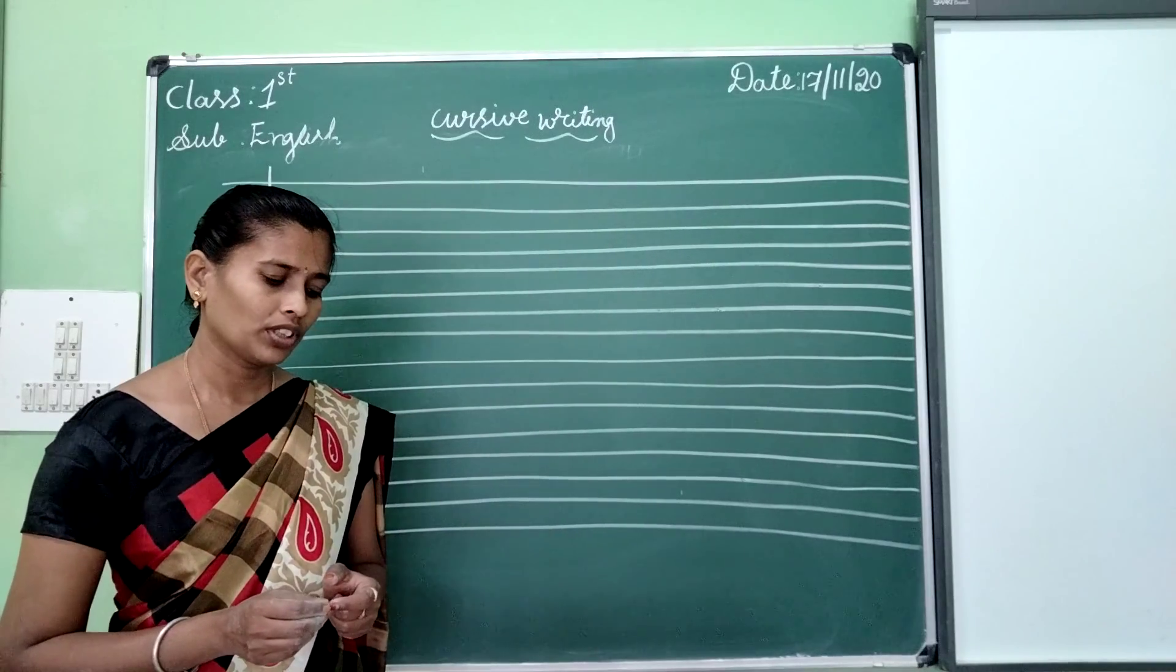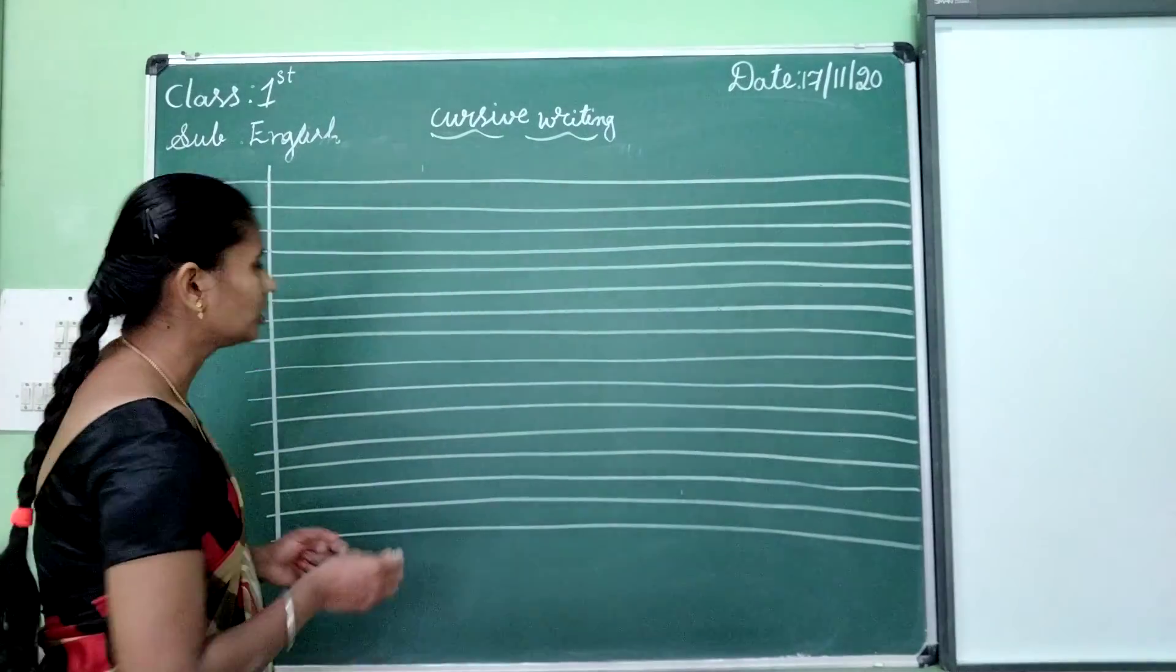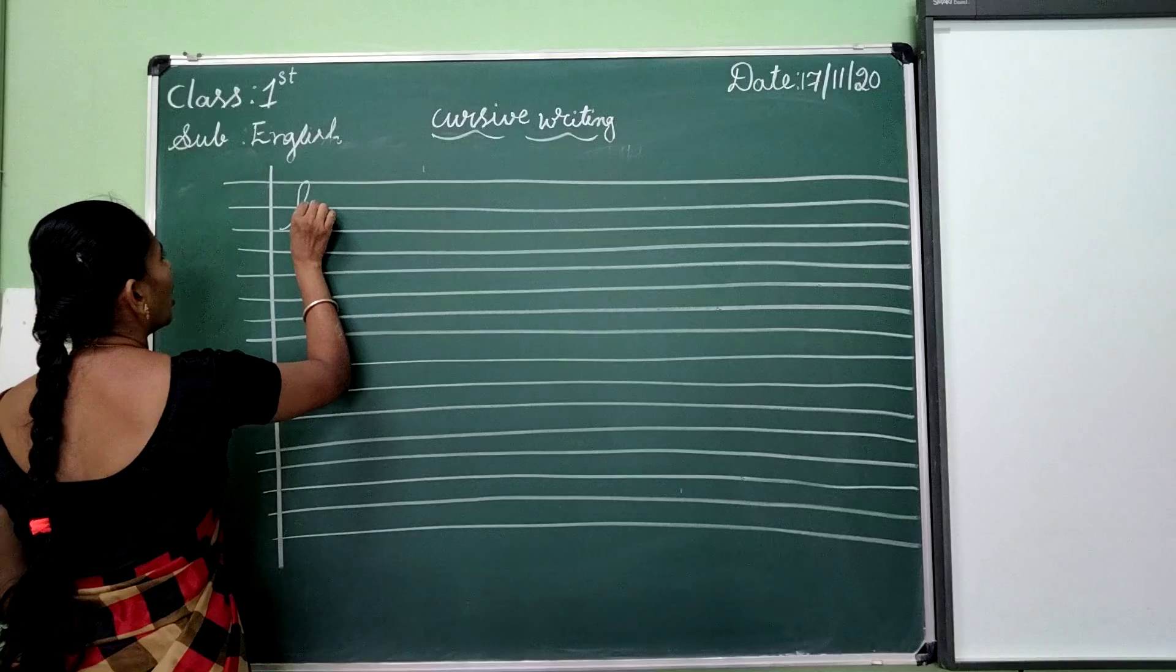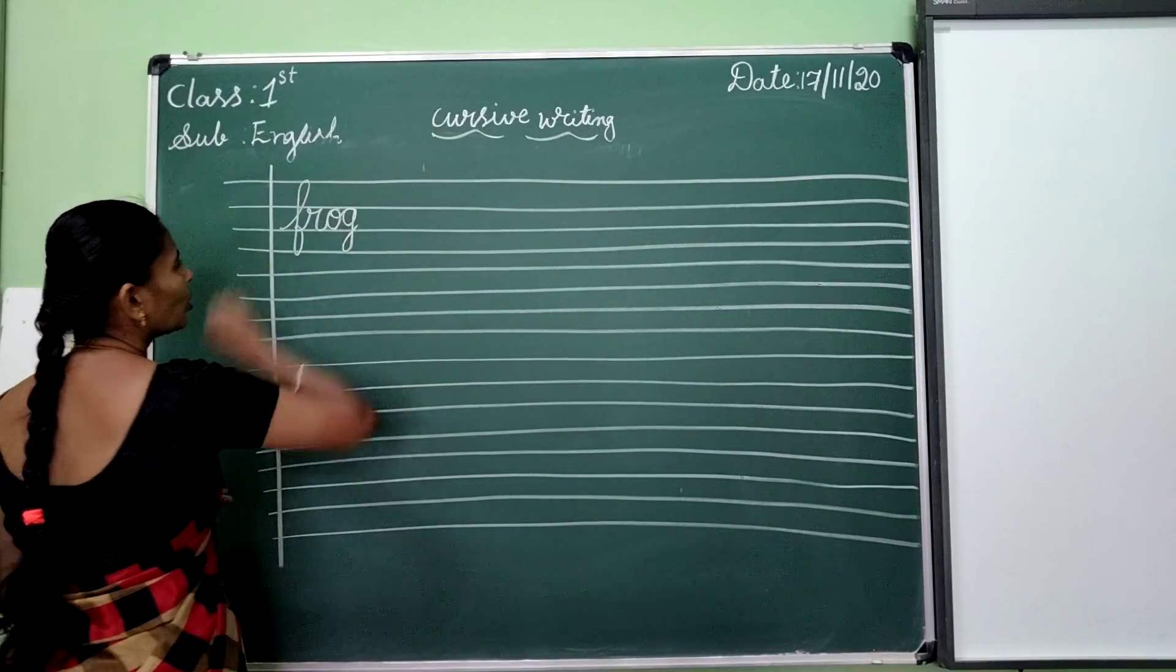From F-R-O-G. First is a frog, fret, fry and prune. First is a frog. F-R-O-G. Frog.